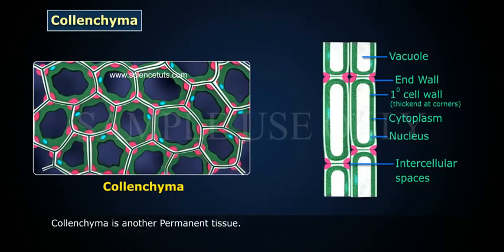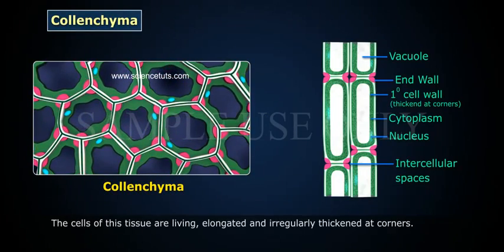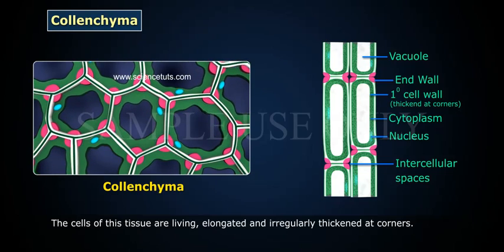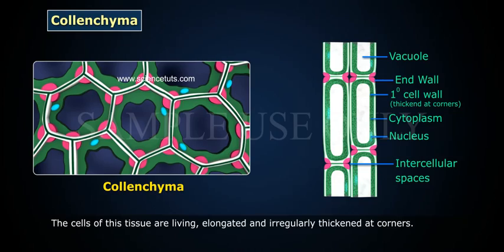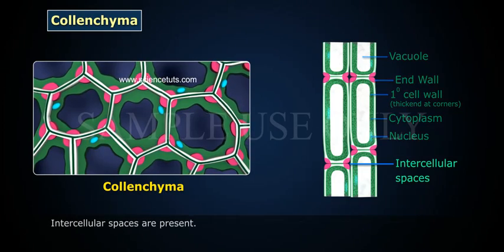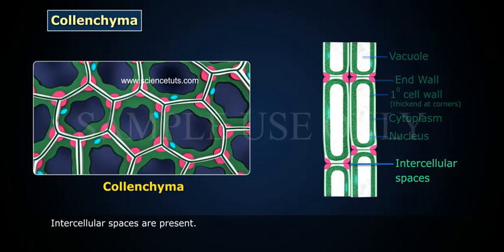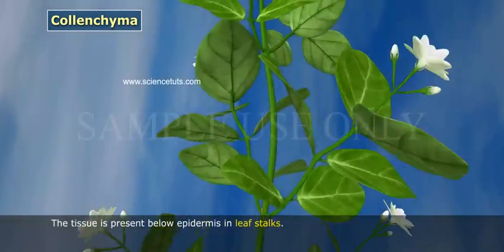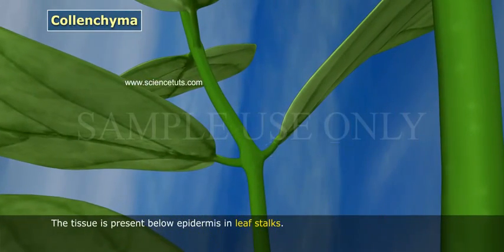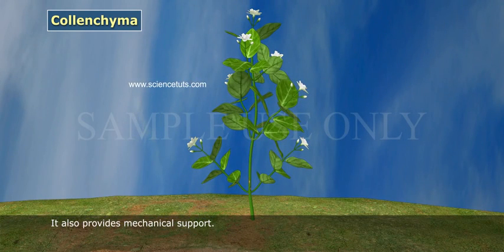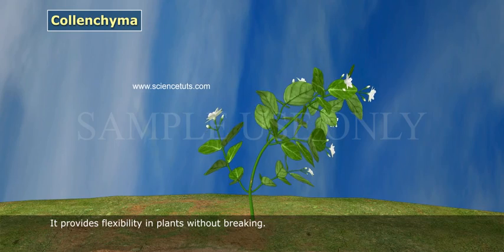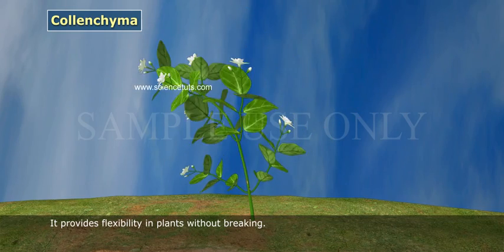Colenchyma is another permanent tissue. Cells of this tissue are living, elongated, and regularly thickened at corners. Intercellular spaces are present. The tissue is present below the epidermis in leaf stalks. It also provides mechanical support and flexibility in plants without breaking.